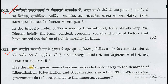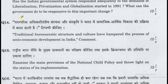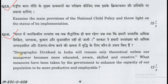Question number 13: Has the Indian governmental system responded adequately to the demands of liberalization, privatization, and globalization started in 1991? What can the government do to be more responsive to this important change? Question number 14: Traditional bureaucratic structure and culture have hampered the process of socio-economic development in India. Comment. Question number 15: Examine the main provisions of the National Child Policy and throw light on the status of its implementation. Question number 16: Demographic dividend in India will remain only theoretical unless our manpower becomes more educated, aware, skilled, and creative. What measures have been taken by the government to enhance the capacity of our population to be more productive and employable?